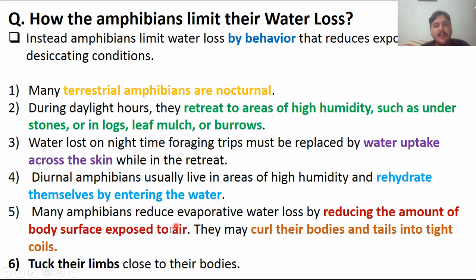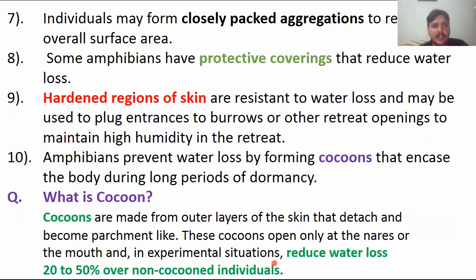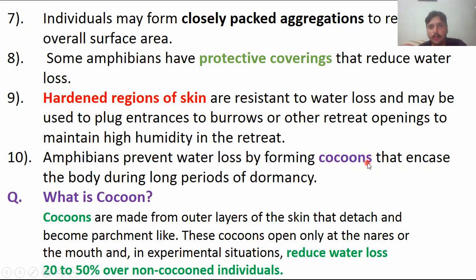Some amphibians reduce surface area by curling their tail and snout, tucking their limbs close to their body, or curling into a ball shape. This reduces water loss from the body surface. Some amphibians also have hardened skin as protective covering. Certain amphibians prevent water loss by forming a cocoon — a protective cover that sheds when conditions become favorable.